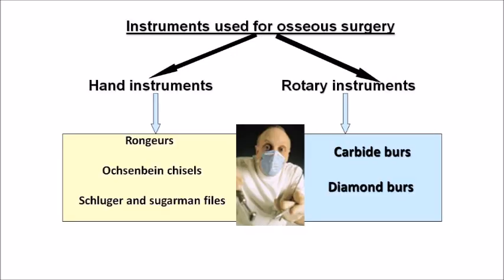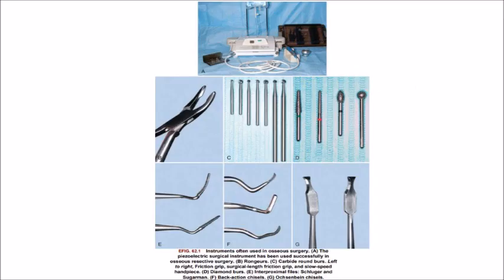Instruments used for osseous surgery include hand instruments and rotary instruments. Hand instruments are rongeurs, Ochsenbein chisels, and Sugarman and Schluger bone files. Rotary instruments include burs — carbide burs and diamond burs. For figure-based questions: a piezoelectric surgical instrument is used for resective osseous surgery; then a rongeur; then carbide round burs — friction grip burs first, then surgical-length friction grip burs, then slow-speed burs; diamond burs identified by their fine grid appearance; interproximal bone files — Schluger is the curved one and Sugarman is the straight one; back action chisels, an example being the Rhodes chisel (R-H-O-D-E-S); and finally Ochsenbein chisels.